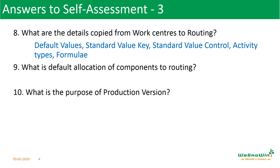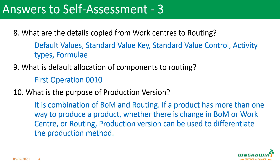What is the default allocation of components to routing? Whenever the BOM is attached to the routing, there are some components automatically attached. The default attachment is with operation 0010, but later we can change — some components may be assigned to operation 20 or 30. But by default, when you attach them, it will be attached to operation 10, which is the first operation. What is the purpose of Production Version? It is a combination of BOM and routing. If a product has more than one way to be produced — whether there is a change in BOM or work center routing — Production Version can be used to differentiate the production method.